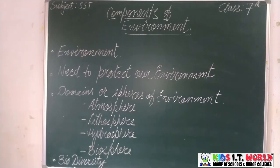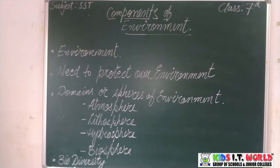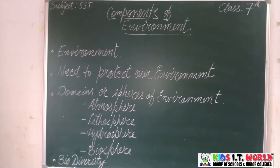The need to protect our environment stems from the following facts. Environment is a basic life support system. It provides us air, water and food which are essential for our life. We need to protect it because we get food, water and air from the natural environment. We need to plant more trees and take care of trees, because trees are good friends of human beings.